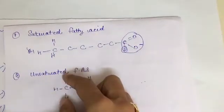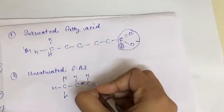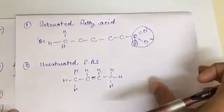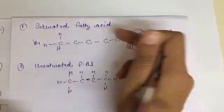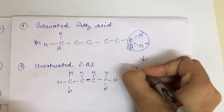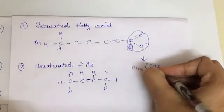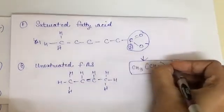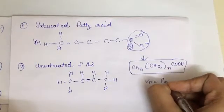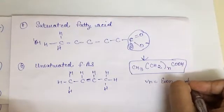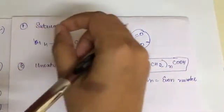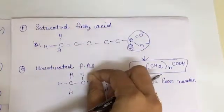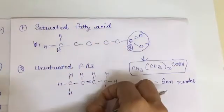The difference between saturated and unsaturated fatty acids is that unsaturated fatty acids have the presence of double bonds or triple bonds. Saturated fatty acids have the general formula CH₃(CH₂)nCOOH where n is an even number. Saturated fatty acids are saturated with hydrogen, while unsaturated fatty acids have double or triple bonds.